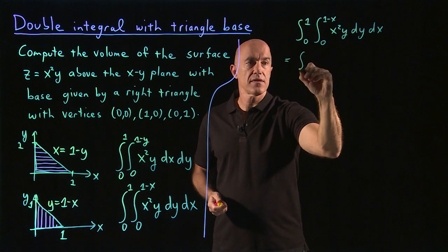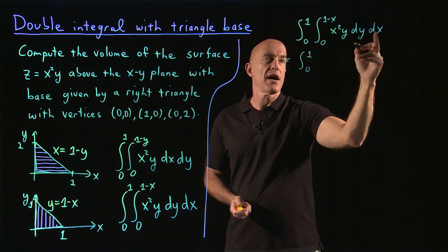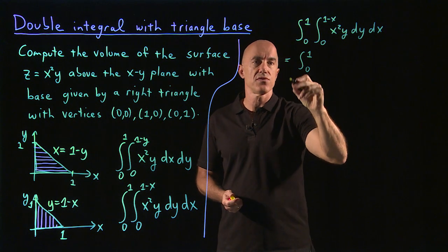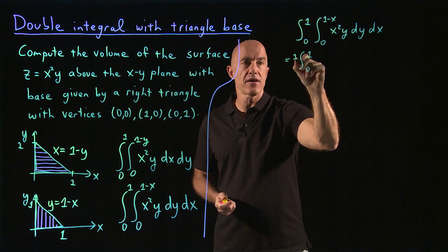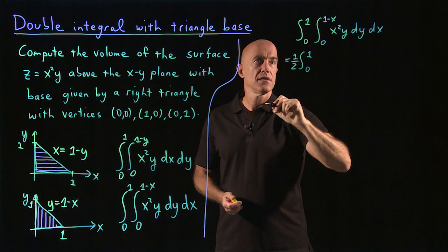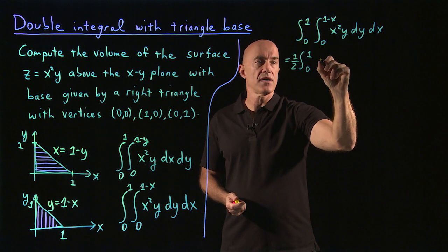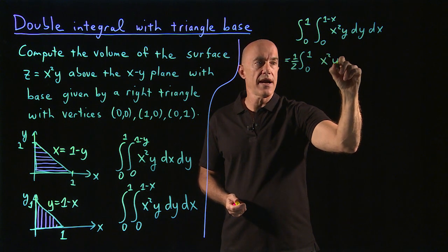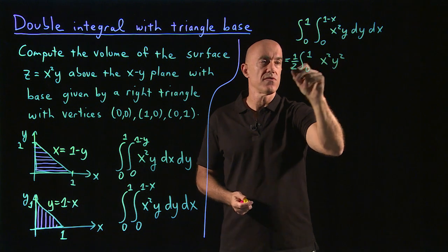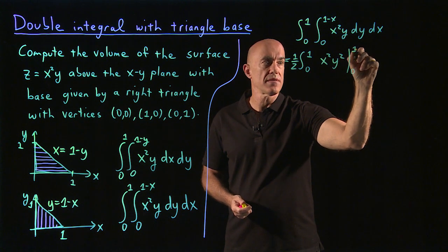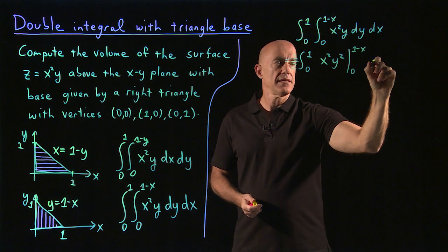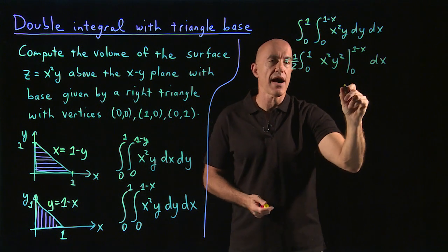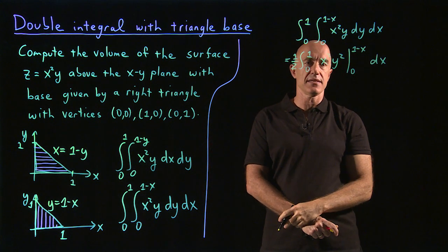Integral from 0 to 1. So we integrate dy, that becomes y squared over 2. So I can factor out a 1 half, and then we have x squared y squared, y squared over 2. That goes from 0 to 1 minus x dx, so the value of y goes from 0 to 1 minus x.